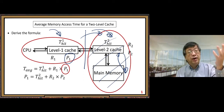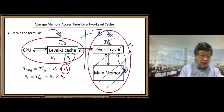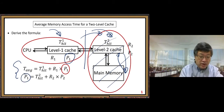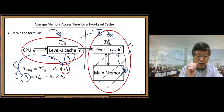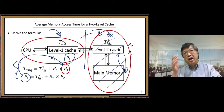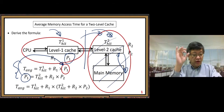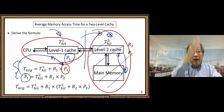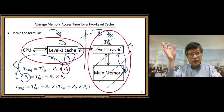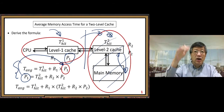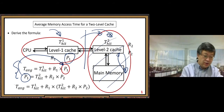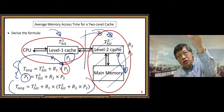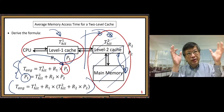Now we can combine the two formulas by substituting the expression for p1 into the first formula. This gives us one longer formula — the average memory access time for the whole system: T_average = t1_hit + r1 × (t2_hit + r2 × p2). This is our final formula for the two-level cache system.